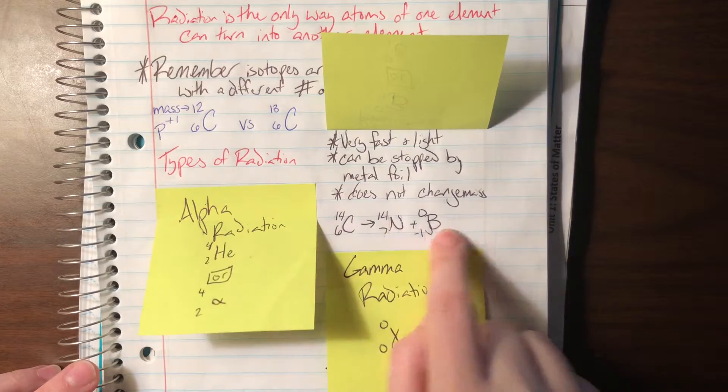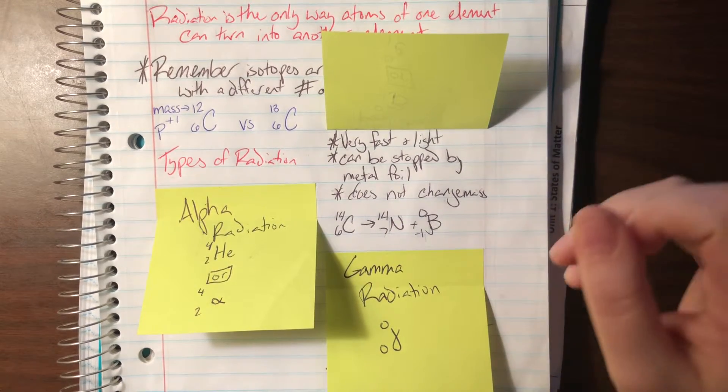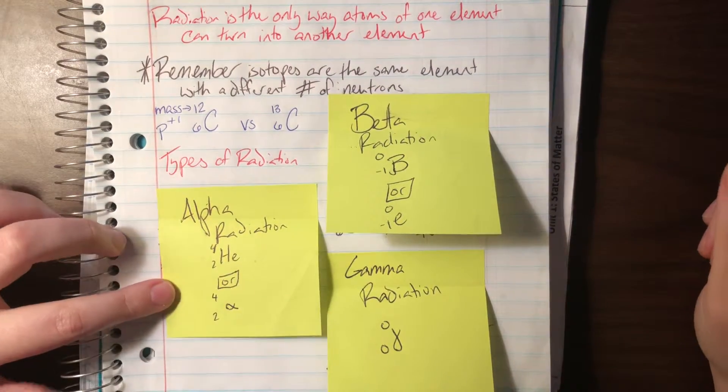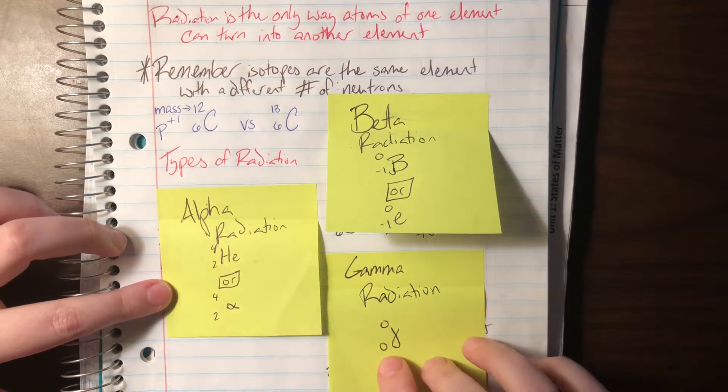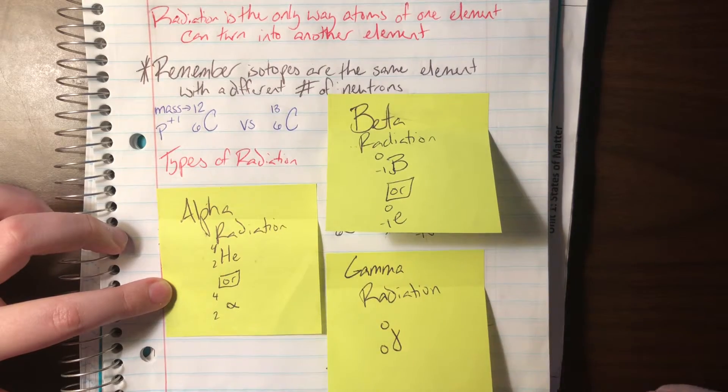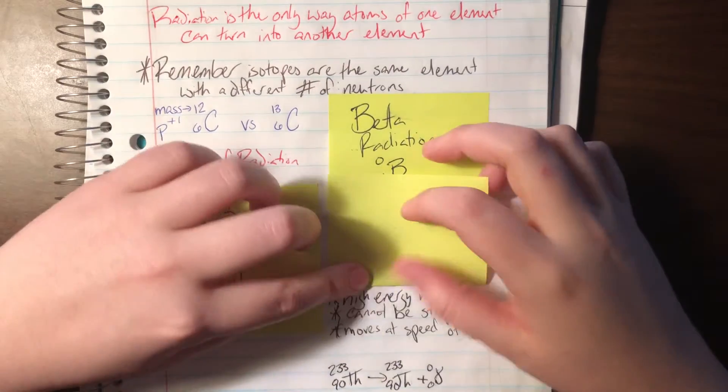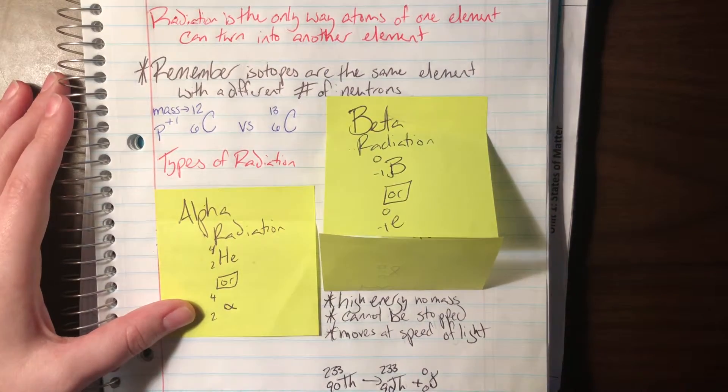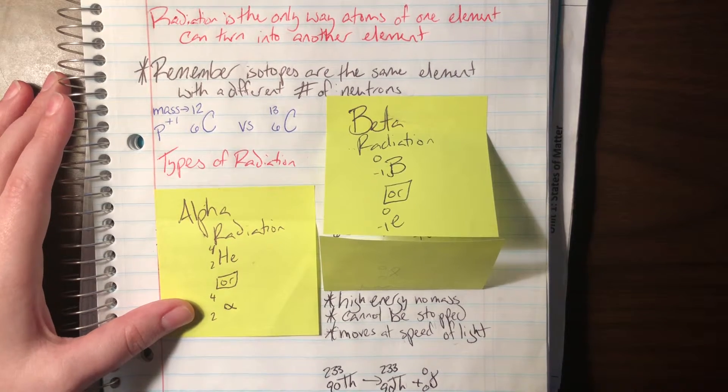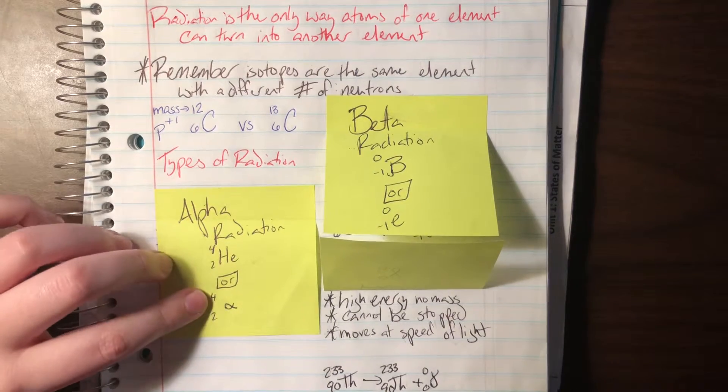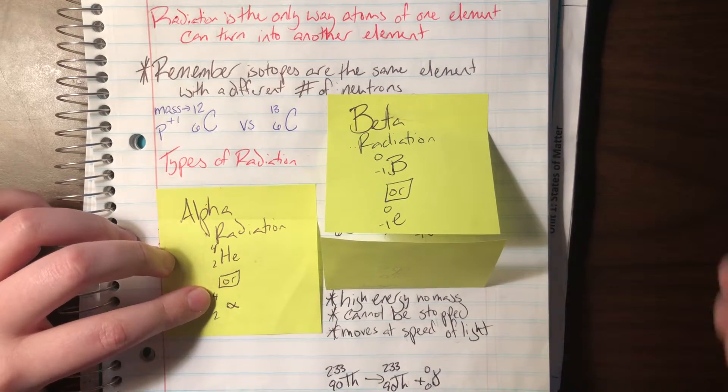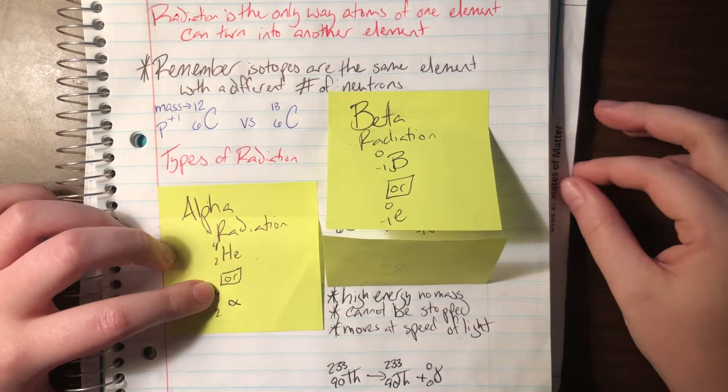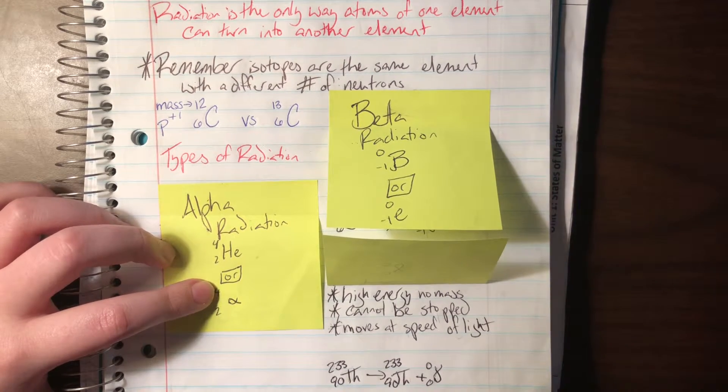Now the very last type of radiation that we like to talk about is going to be gamma radiation. It has this fancy symbol, and you'll notice here that it has no mass and it has no protons attached. Gamma radiation, since it has no mass, is very very high energy. It has a whole lot of energy. It's moving very very fast and it weighs nearly nothing, so it goes nearly at the speed of light or at the speed of light. Gamma radiation cannot be stopped. Gamma radiation has too much energy to the point where we cannot stop it. No amount of lead, no amount of concrete, nothing is going to stop gamma radiation.